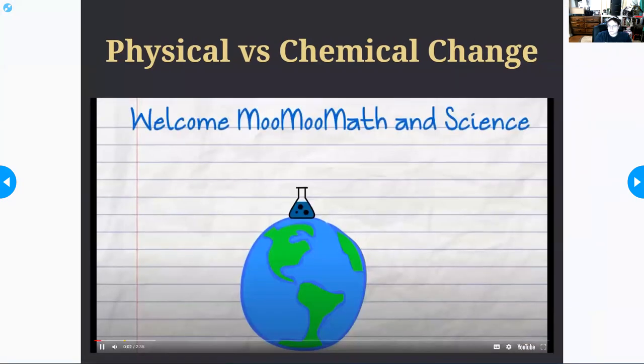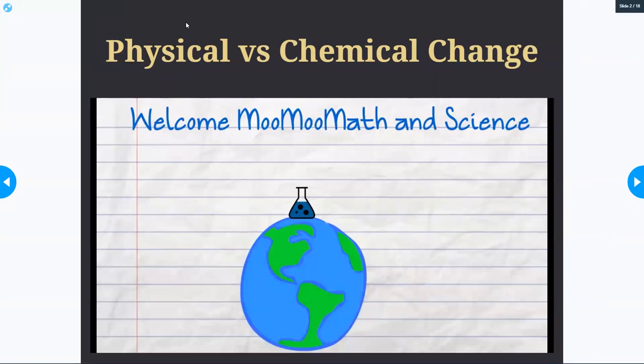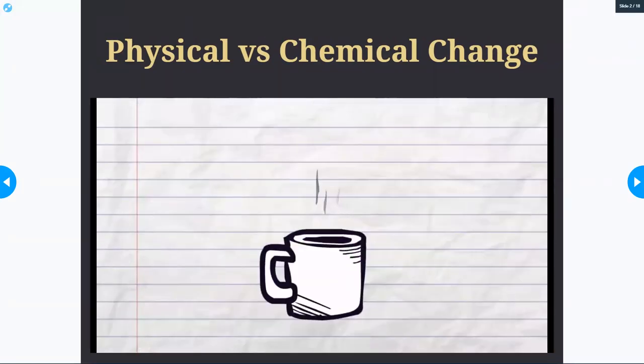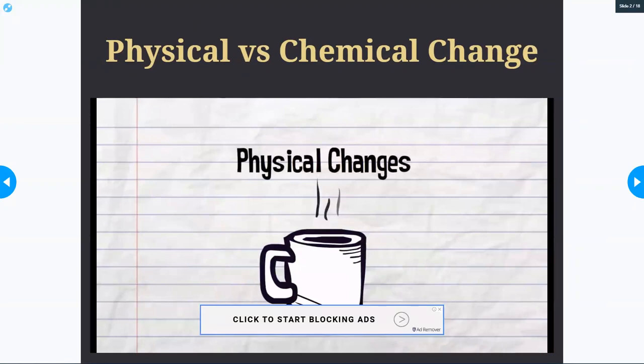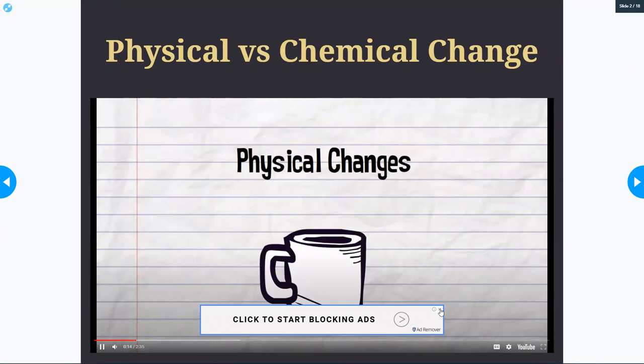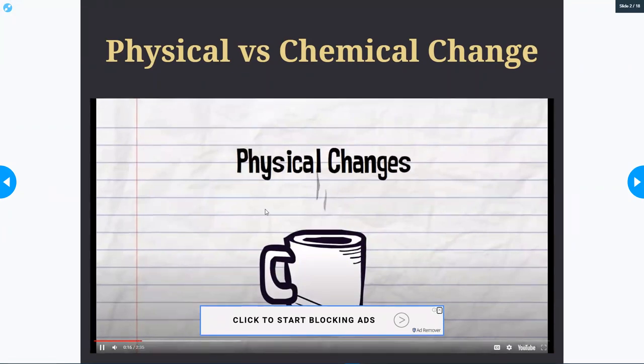Welcome to Moo Moo Math and Science. In this video I'd like to talk about physical and chemical changes. Physical changes are changes in appearance only. A new substance is not created and chemical bonds are not formed or broken.